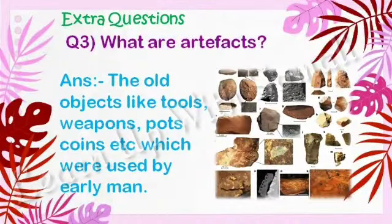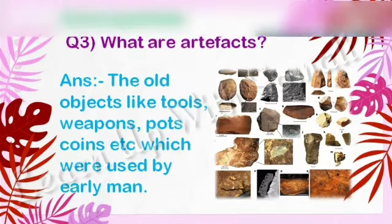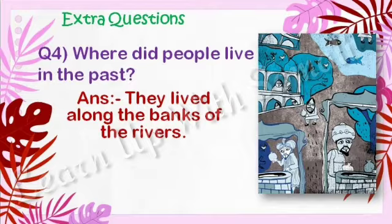Question number three: What are artifacts? The old objects like tools, weapons, pots, coins, etc., which were used by early man are called artifacts. Question number four: Where did people live in the past? The answer is they lived along the banks of the rivers.